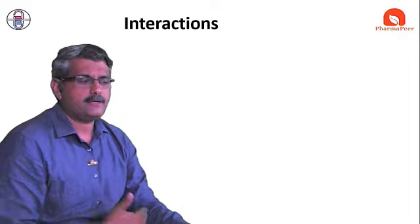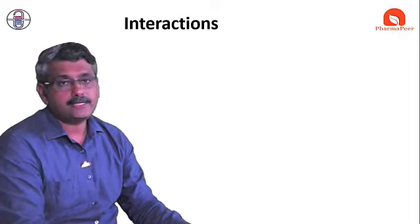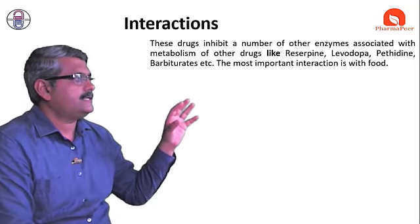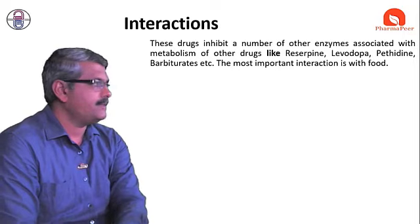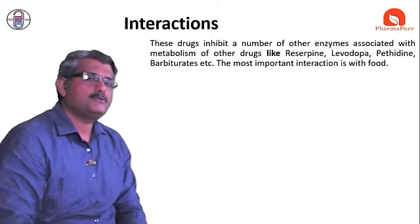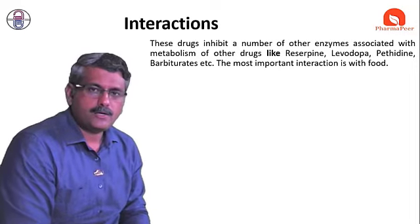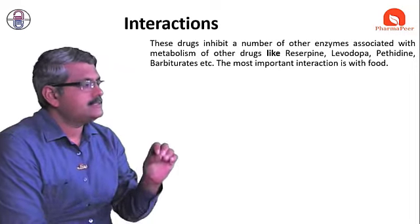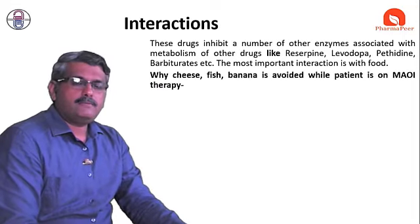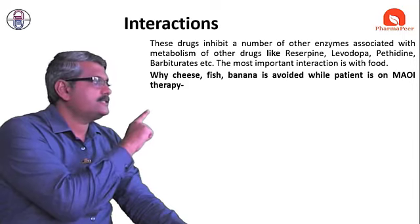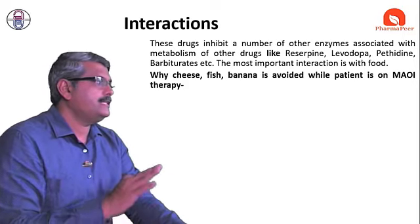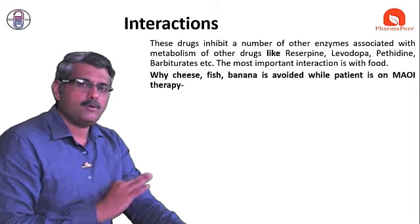An important topic is possible drug interactions. These drugs are associated with decreased metabolic activity of certain enzymes. Due to this decrease, drugs like reserpine, levodopa, pethidine, and barbiturates need to be used under supervision. Additionally, there is a very important interaction with food. A commonly asked exam question is: why are cheese, fish, and banana avoided when a patient is on MAO inhibitor therapy?